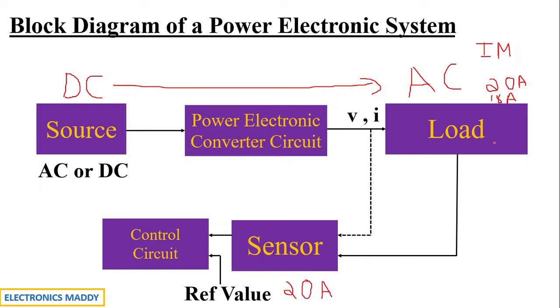Say there was a deviation of 18 amps previously, that will be compared because we have taken the feedback signals with the help of a sensor. And this will be compared with a reference value of 20 amperes. And the difference will be identified and it will be given as the gating pulses to the power electronic converter circuit in this particular fashion.